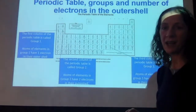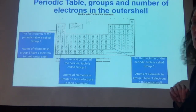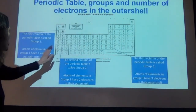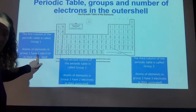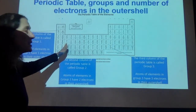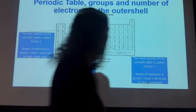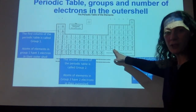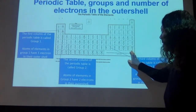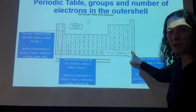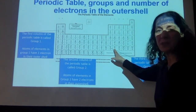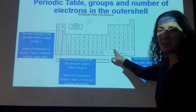Not only can we tell the period from the electron configuration, we can also tell the group. Any element in group one has one electron in its outer shell. Group two means two electrons in the outer shell. The transition metals don't have a group number. Group three has three electrons in the outer shell, four has four, five has five, and so on. Group zero means the element has a full outer shell — that's why it's called group zero. For all other groups, the group number tells you how many electrons the element has in its outer shell.